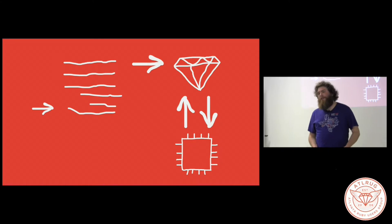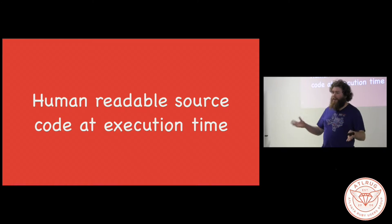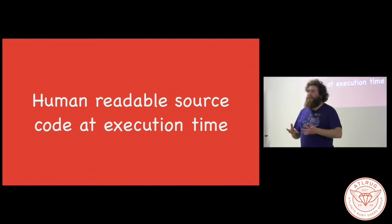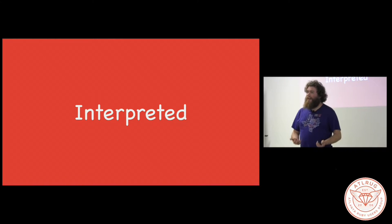The important thing to note here is that in order to execute a Ruby program, the human-readable source code and the Ruby interpreter have to be present at the same time in order for the program to be executed. And this is what it means for Ruby to be an interpreted programming language. The idea here is that there is no decoupling between source code and execution time. The Ruby source code has to be present at execution time in order for your program to run.